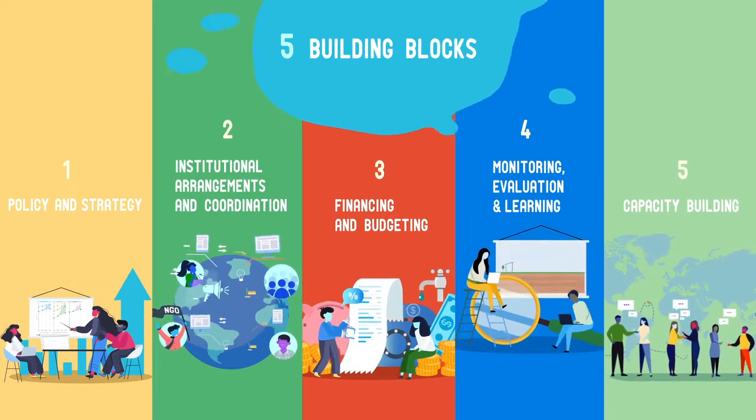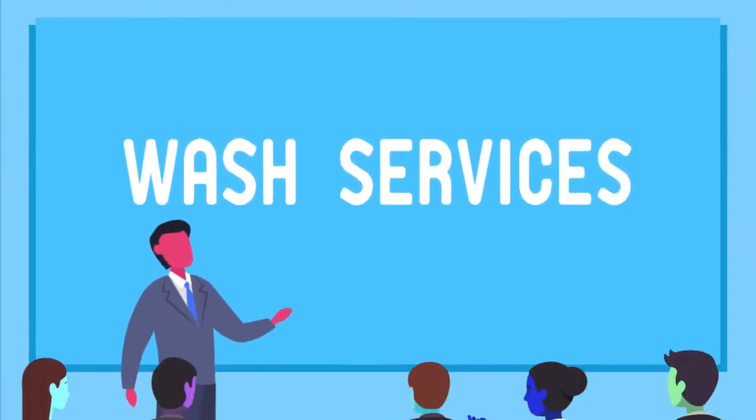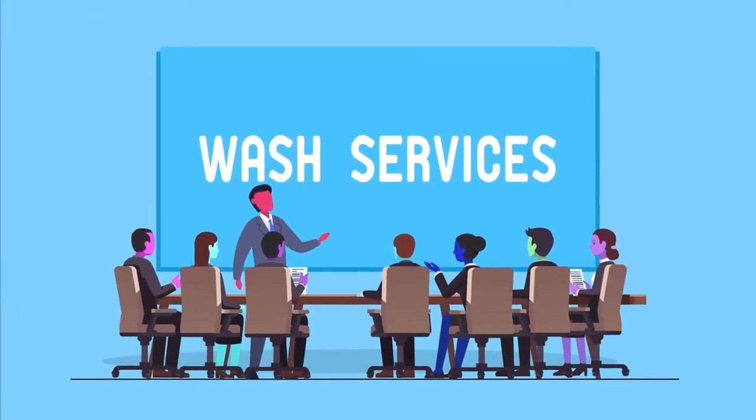As these five components show, strengthening the enabling environment is a collective effort. Importantly, political leadership can be both a catalyst and a support to achieve this goal.